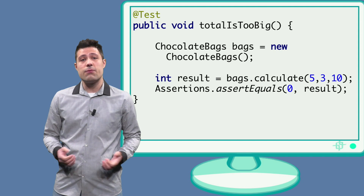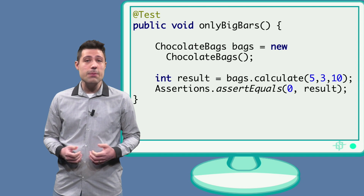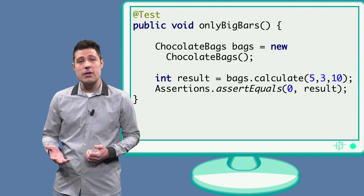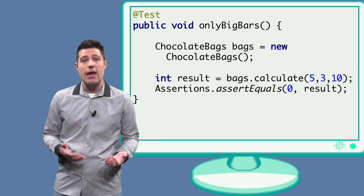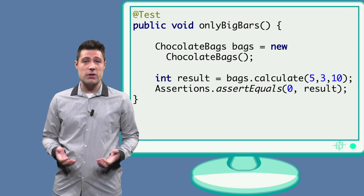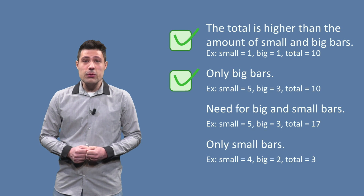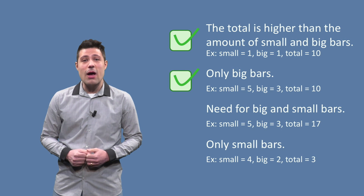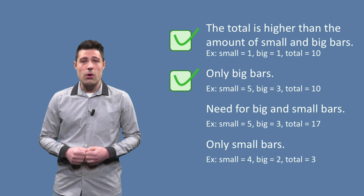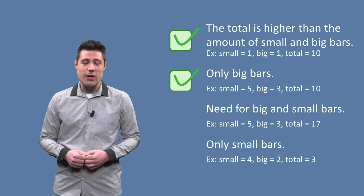We repeat this process for the other partitions. The next test is 'only big bars' — we pass 5, 3, and 10 to the calculate method, and we assert that the result is 0. The first two tests are now automated, but we still have two more to go. This is your task in the next exercise. Good luck!